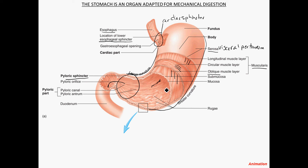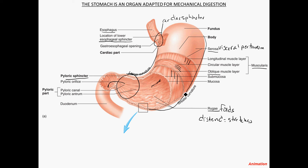One more gross anatomical feature: you can see the folds here, called the rugae. These are gross anatomical folds present when the stomach is not distended. When food enters the stomach, it can greatly distend — stretch out. So after a big Thanksgiving dinner, that stomach is probably completely distended after all that food is pushed down there.